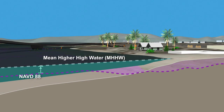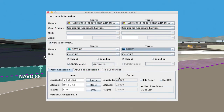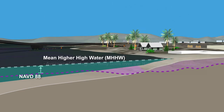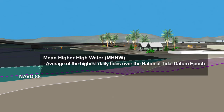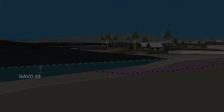VDatum can also transform our 11-meter NAVD88 height to a height referenced to Mean Higher High Water, or MHHW — the average of the highest daily tides over the National Tidal Datum Epoch. The Mean Higher High Water datum is helpful for inundation modeling and storm surge forecasting.